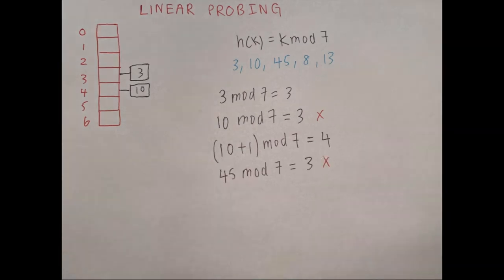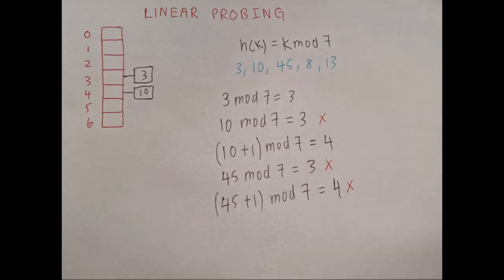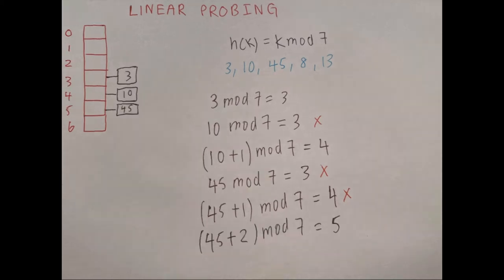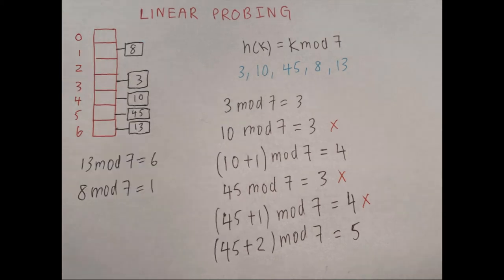Next we do 45 mod 7, which is 3, but index 3 is already occupied. So we add 1: 46 mod 7 equals 4, but that's also occupied by key 10. So we add 1 again: 45 + 2 mod 7 is 5, so we put 45 at index 5. Finally, 8 mod 7 is 1 and 13 mod 7 is 6, and we encounter no collisions in those cases.